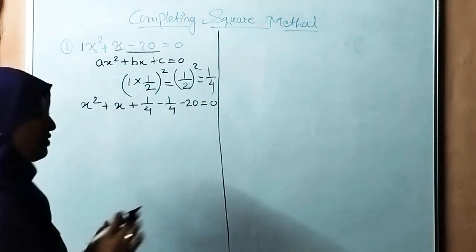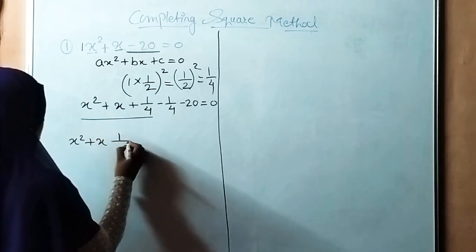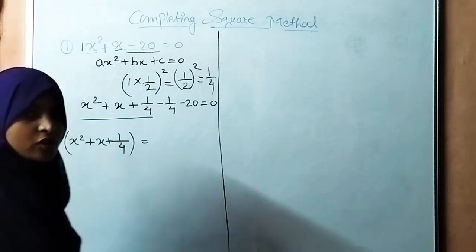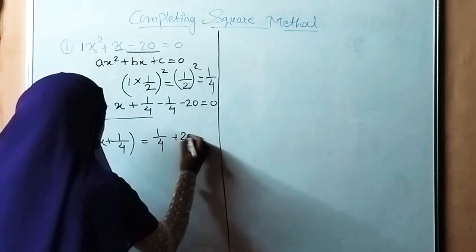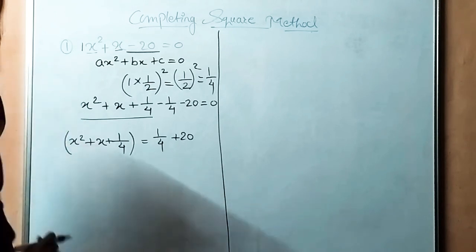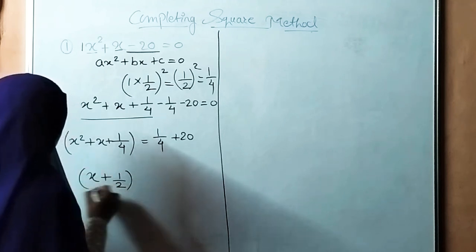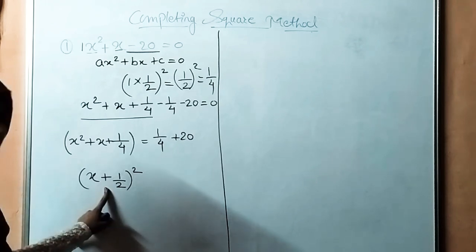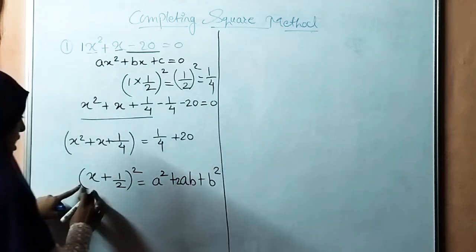Now we are going to simplify the equation. We write x square plus x plus 1/4 as it is, then minus 1/4 and minus 20. Now, since we have a positive sign, the form x square plus x plus 1/4 fits the identity a square plus 2ab plus b square, where a is x and b is 1/2. So this becomes x plus 1/2 bracket square.